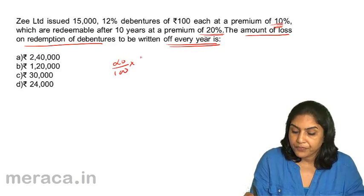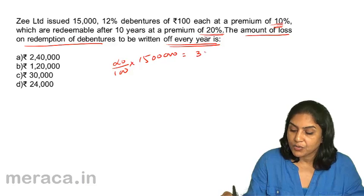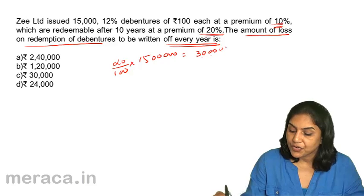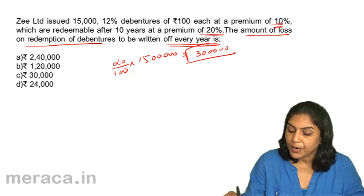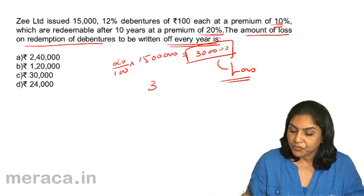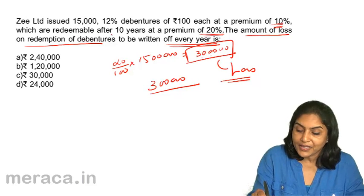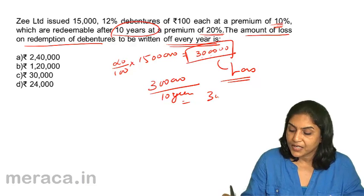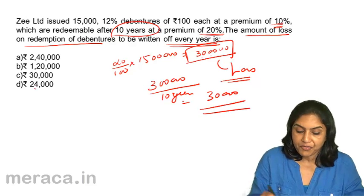20% of 15 lakhs is equal to 3 lakhs. 3 lakhs is the total amount of loss. What is the amount to be written off every year? 3 lakhs divided by the life of the debenture, that is 10 years, will give us 30,000 to be written off every year.